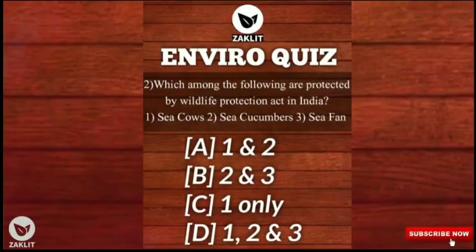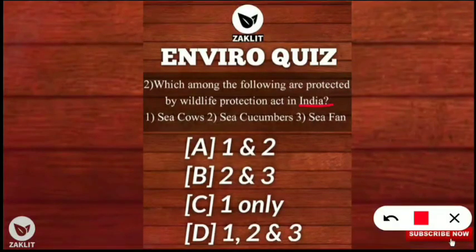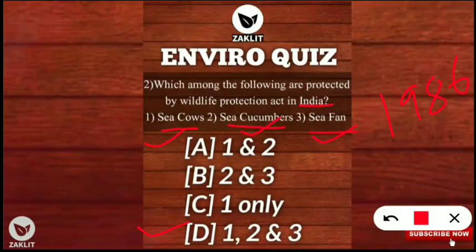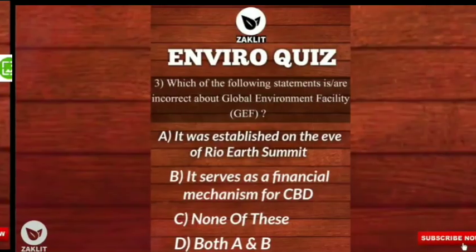The second question was: which among the following are protected by the Wildlife Protection Act in India? The Wildlife Protection Act is from 1986. The options were sea cows, sea cucumber, and sea fan. All three organisms are protected under the Wildlife Protection Act, so option D is correct — sea cows, sea cucumber, and sea fan are protected species under the Wildlife Protection Act in India.